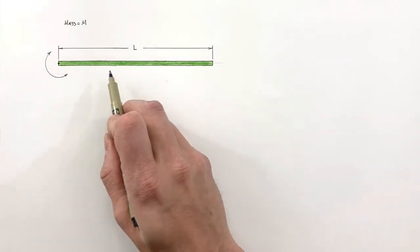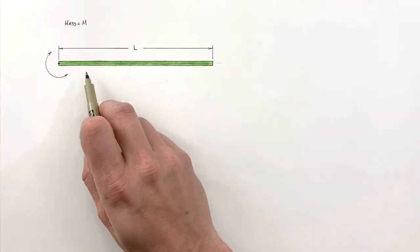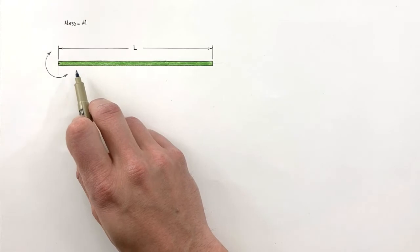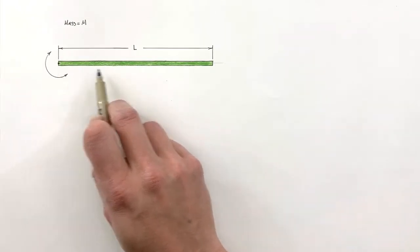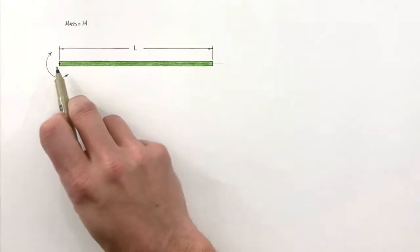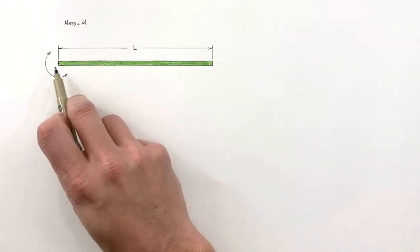Today we're going to derive a function for the rotational moment of inertia of a long thin rod when it is rotated around its end.